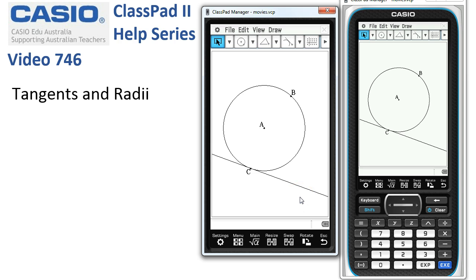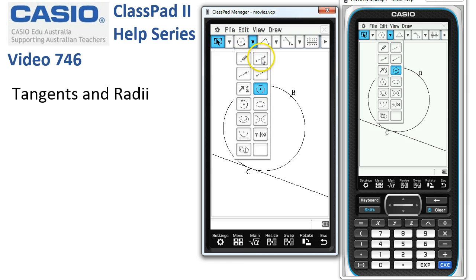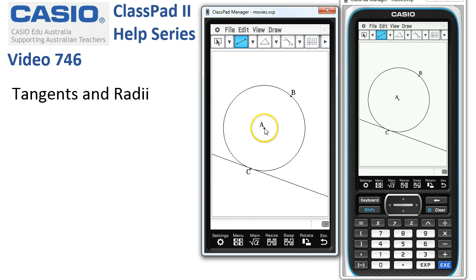Next is to put in a radius from A to C. We'll use the line segment tool to do that and tap onto the center of the circle and then onto point C, so that this is now a radius to the point of tangency.